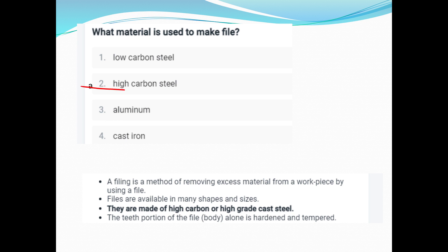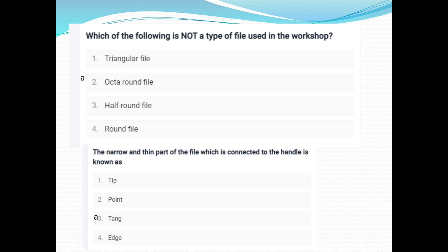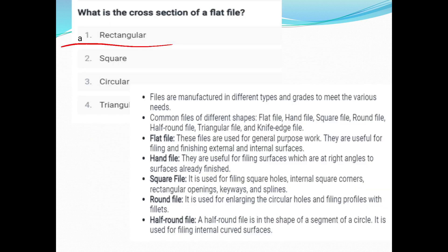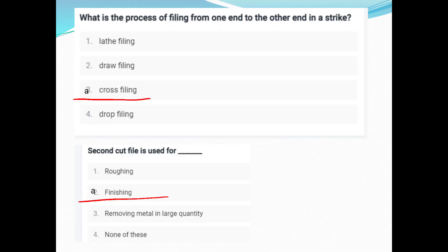The material used to make files is high carbon steel or high grade cast steel. The narrow and thin part of the file connected to the handle is known as the tang. These are important previous exam questions. You can learn these questions for the PSE exam.